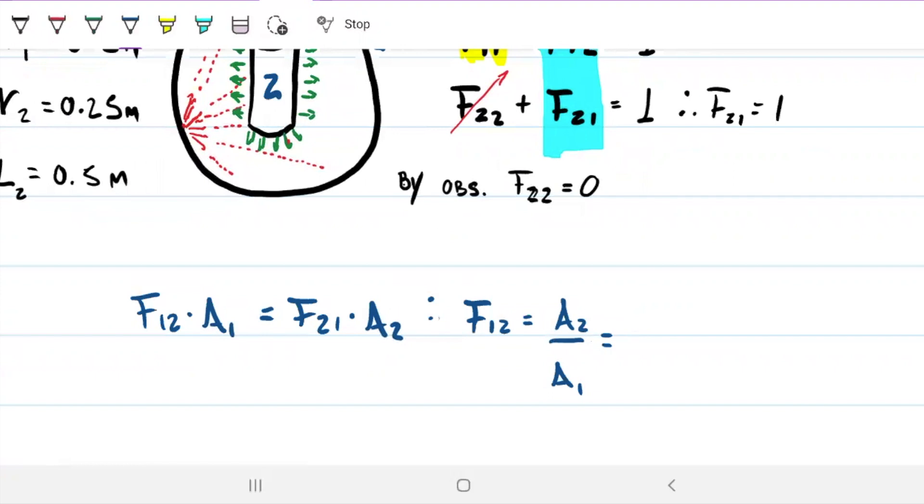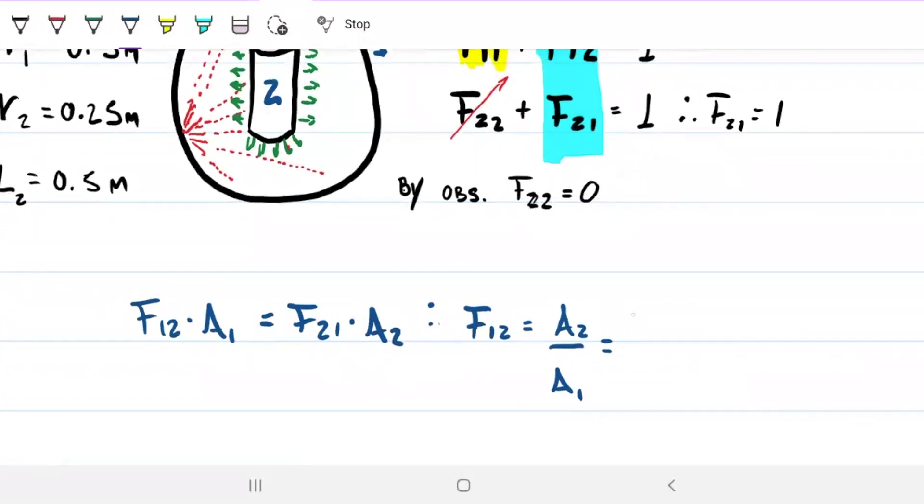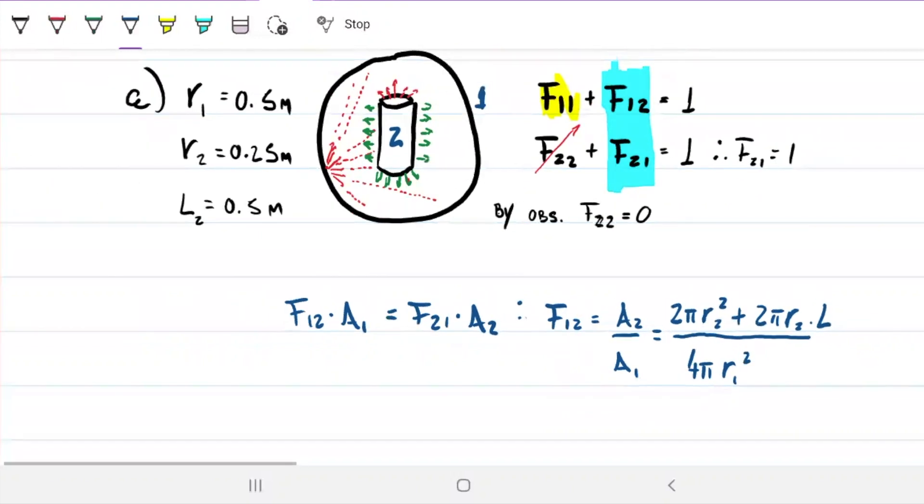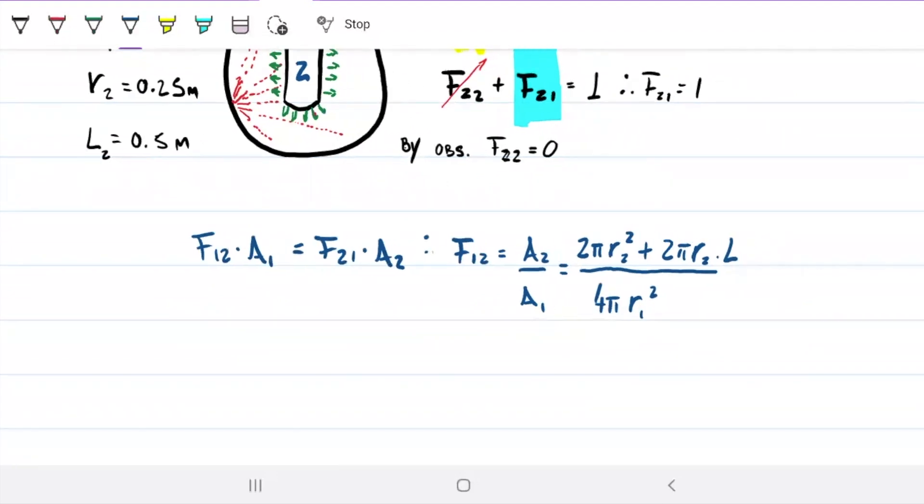So what is it saying? How much the sphere sees a cylinder is the ratio between the area of the cylinder and the area of the sphere. What is the area of the cylinder? It's going to be the top and the bottom side, so we have 2 times pi R2 squared, plus the side part, which is 2 pi R2 L. And on the area of the sphere, we have 4 pi R1 squared. So that is the relationship we solve.